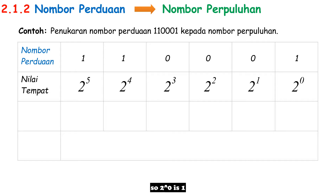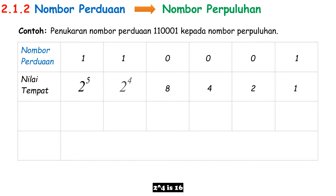So: 2 to the power of 0 is 1; 2 to the power of 1 is 2; 2 to the power of 2 is 4; 2 to the power of 3 is 8; 2 to the power of 4 is 16; and 2 to the power of 5 is 32.